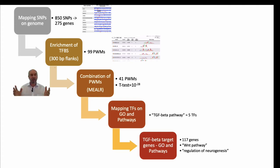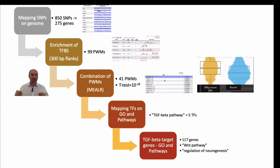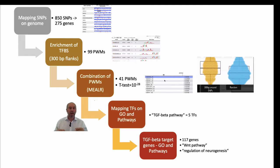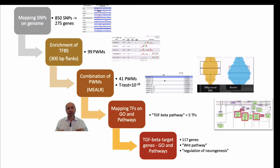Next, we focused on selecting proper positional weight matrices, so we looked for combinations of PWMs using the algorithm called Miller and we found 41 positional weight matrices which statistically significantly discriminate the regions around the SNPs from random regions in the genome. We then took transcription factors connected to these 41 matrices and identified which GO terms and pathways are enriched among those transcription factors. We found the TGF-beta pathway with five transcription factors in our analysis.